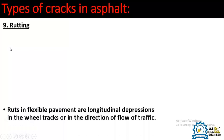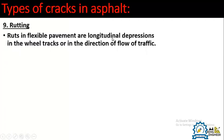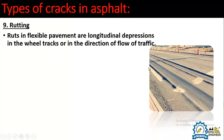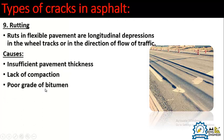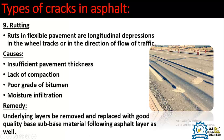Number nine is rutting. Ruts in flexible pavement are longitudinal depressions in the wheel track, running in the direction of traffic flow — as visible in the picture, ruts form in the wheel path. Causes include insufficient pavement thickness, lack of compaction, poor grade of bitumen, and moisture infiltration. The remedy involves removing the underlying layers and replacing them with good quality base or sub-base material, followed by a surface layer.